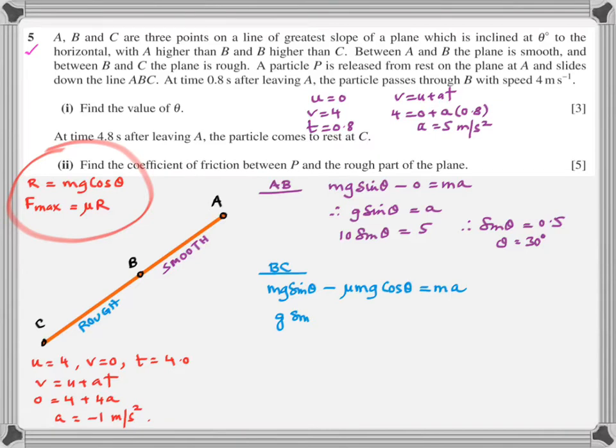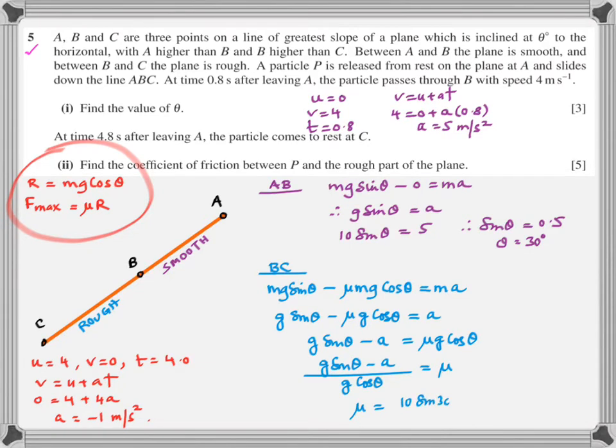Therefore, G sinθ - μG cosθ = A. What are we looking for? We are looking for μ. Make μ the subject. After you have made μ the subject, plug in the values. Take care of the plus minus sign, evaluate, and then you get the answer as 0.693. The value of μ is 0.693. So that's how question number five was to be done.